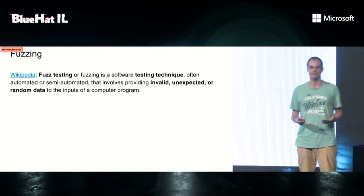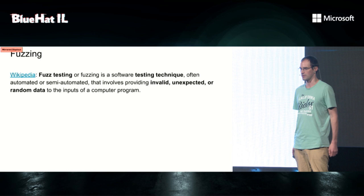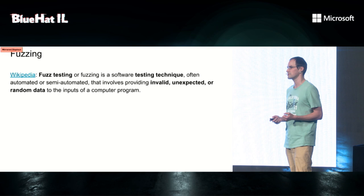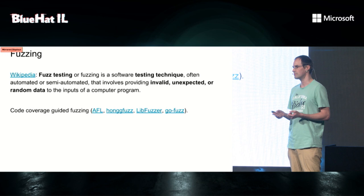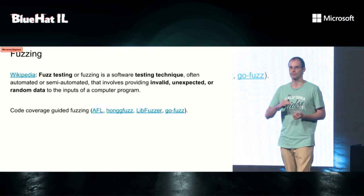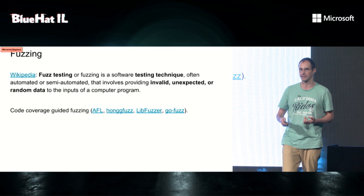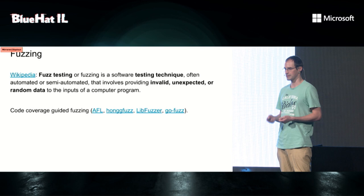In essence, fuzzing is a very simple thing. You generate a random input, you feed it into a program, and you see what happens — did it crash or not? But if you feed completely random data, most likely you will not find lots of bugs, because execution will bail out on the first if-condition in the code and you will not actually cover a majority of the code. The current state of the art is coverage-guided fuzzing; tools like AFL, CONFUS, GoFuzz, and LibFuzz are all coverage-guided.